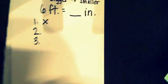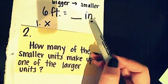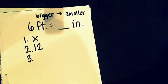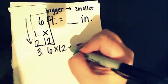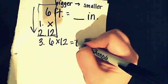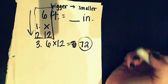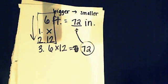Step two: how many of the smaller units make up one of the larger units? Inches are smaller — how many inches make up one foot? Twelve inches make up one foot. Step three — the easiest step — just do it. Six times twelve. Six times twelve is seventy-two. Here is our answer. We need to move it to the blank where the teacher is looking for it. Six feet equals seventy-two inches.